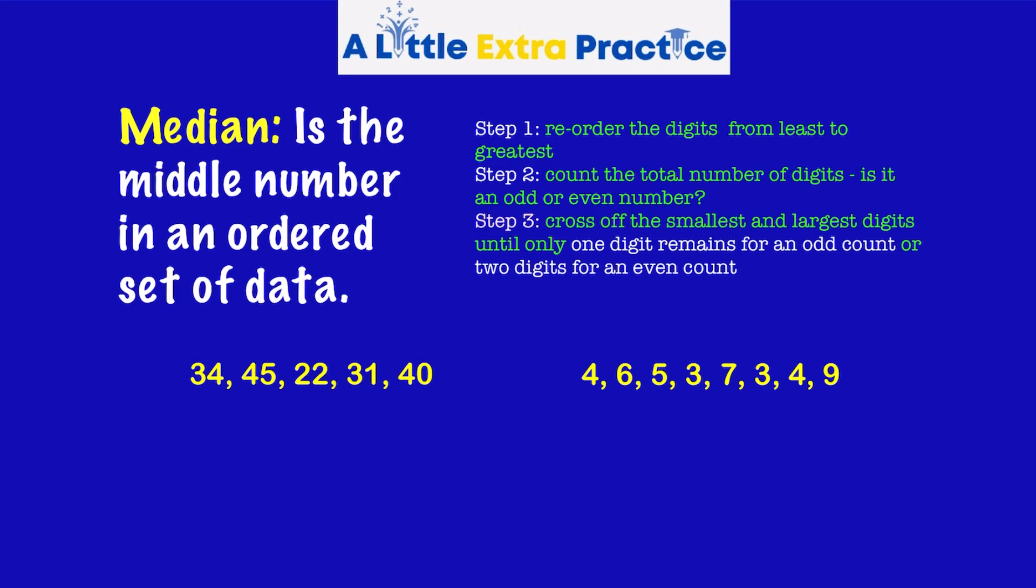Median is the middle number in an ordered set of data. There are three steps to solve for median. Step one, reorder the digits from least to greatest. Step two, count the total number of digits. Is it an odd or even number? Step three, cross off the smallest and largest digits until only one digit remains for an odd count or two digits remain for an even count.